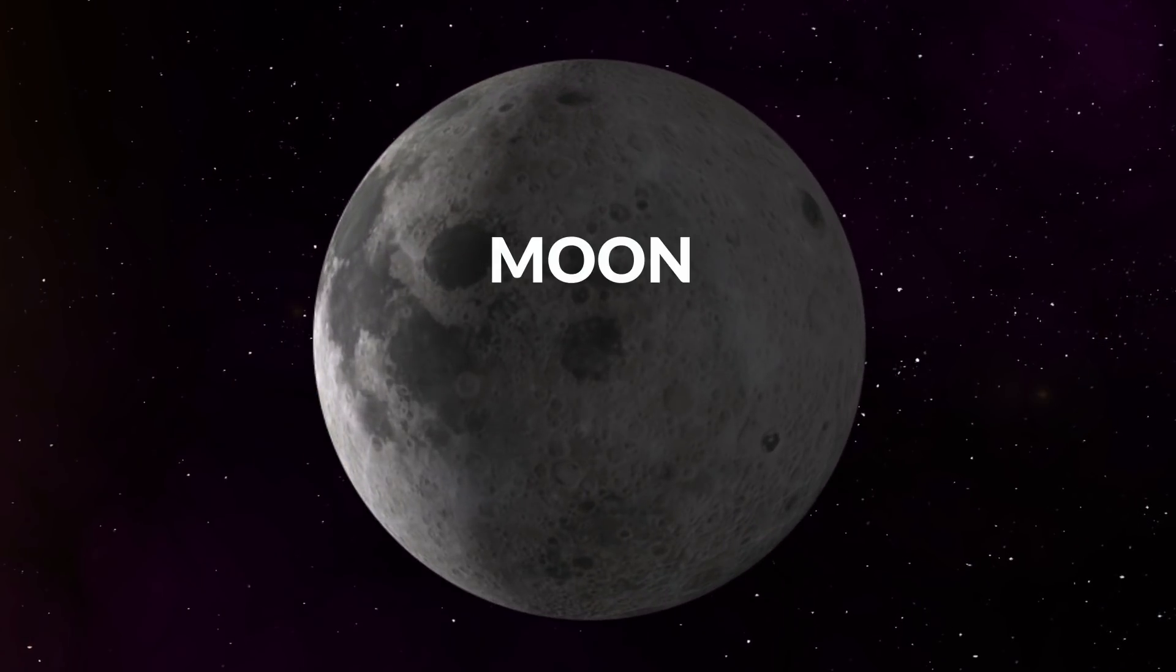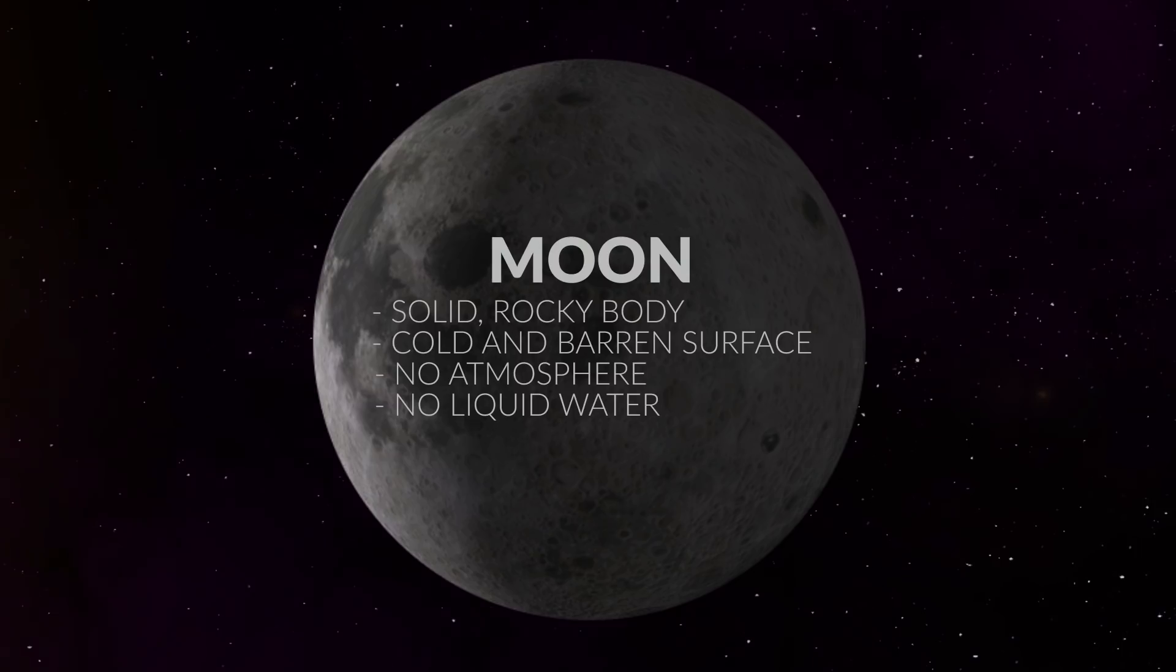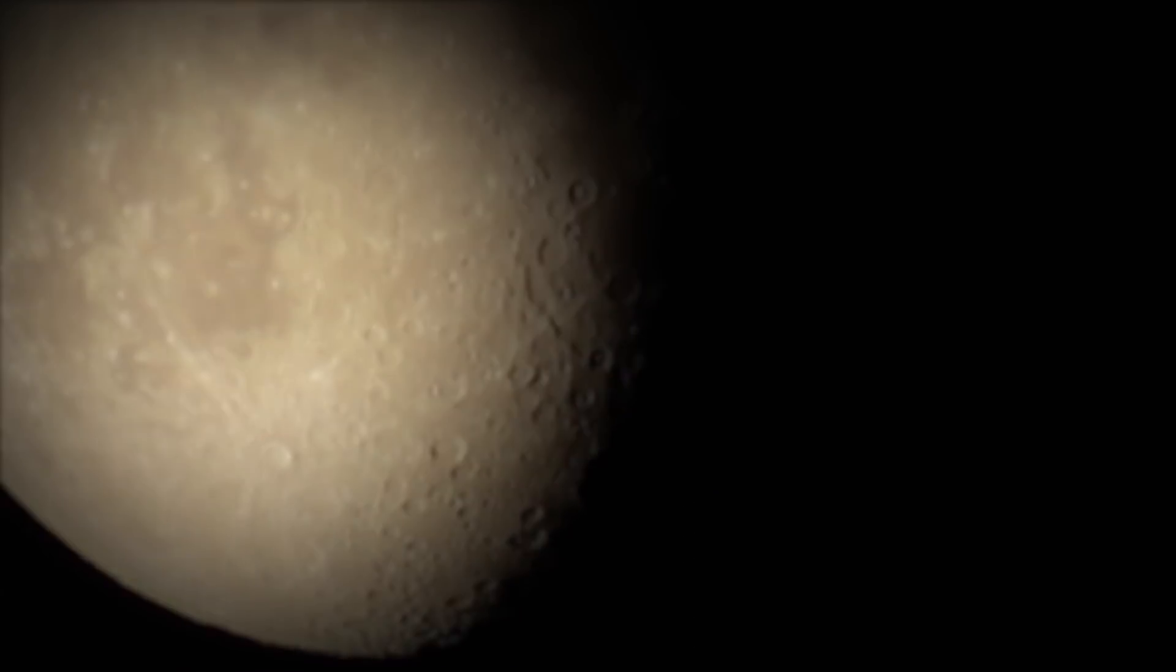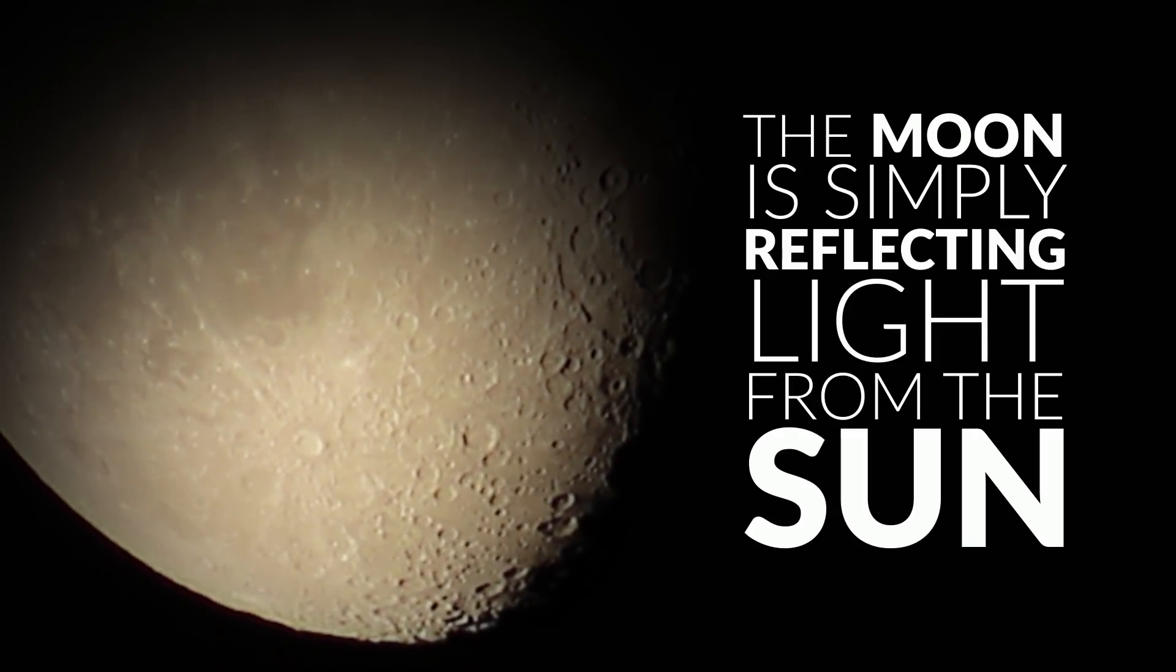The moon, on the other hand, is a solid, rocky body with a cold, barren surface. No atmosphere, no liquid water. The moon's surface that we can see quite well, especially through binoculars or telescopes, is simply reflecting light from the sun.